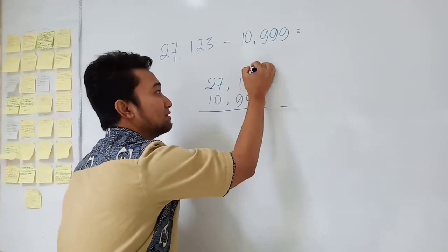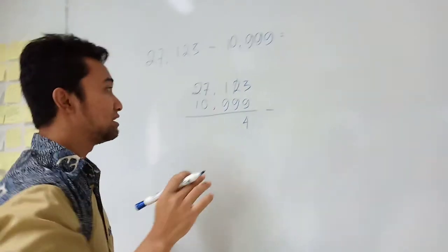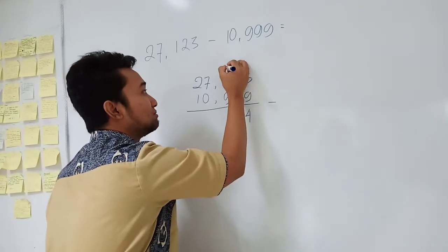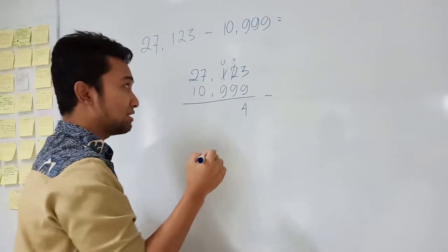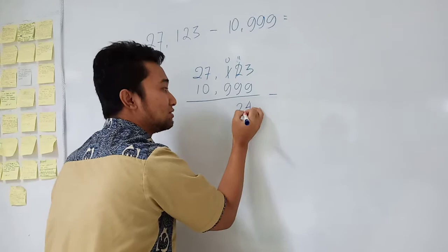Oh, I mean 1. Okay, I mean 1 minus 9, you cannot again. So you can borrow from this one to be 11 and this one to be 0. Alright, 11 minus 9 is 2.